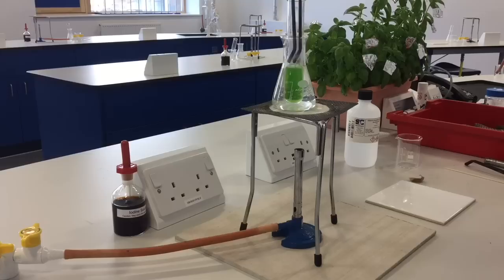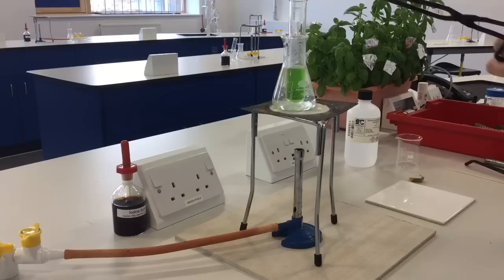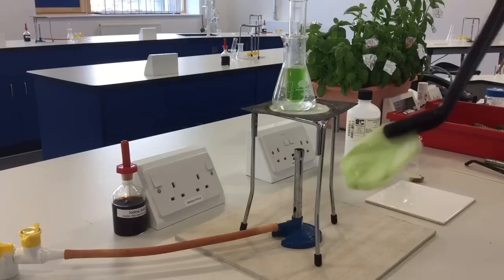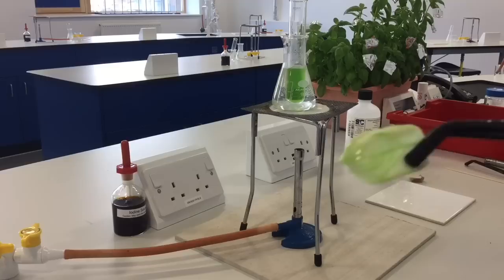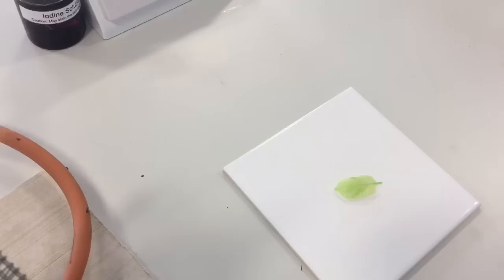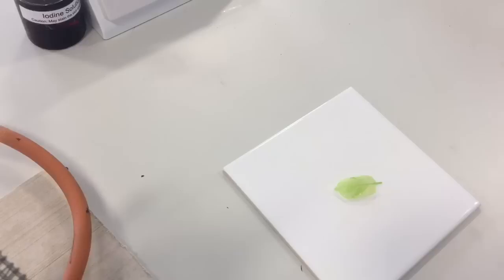Out comes our leaf, and as we can see, pretty much all of the green pigment has gone from it. Now it's a very white or colorless leaf we've got, so we're going to test that with iodine for starch. We'll pop it onto our tile over here.